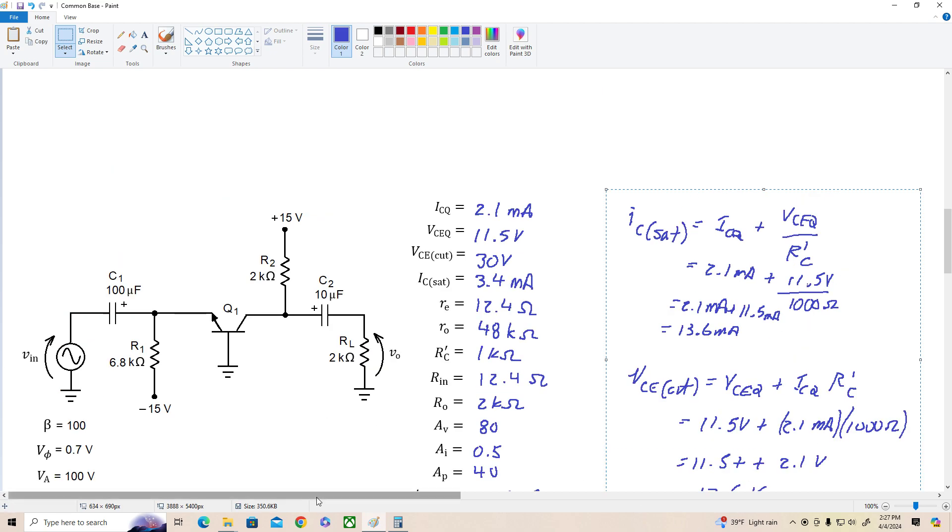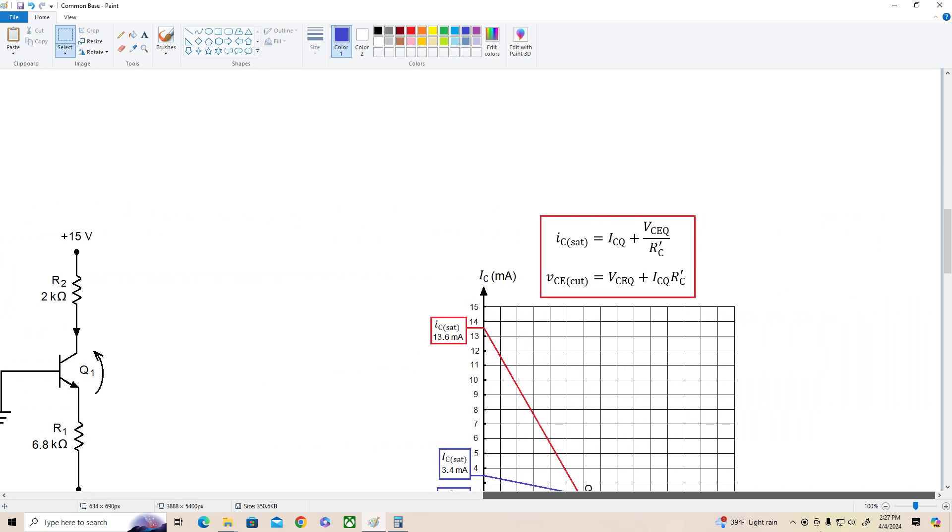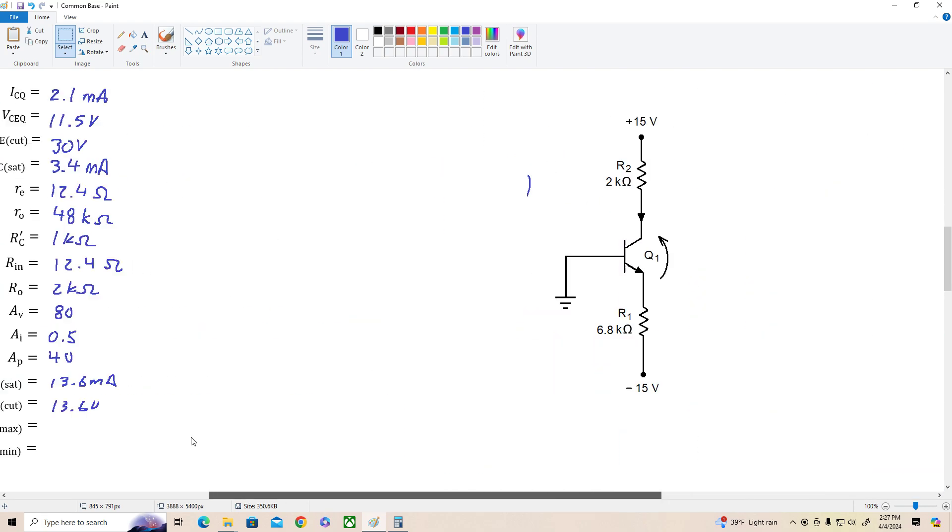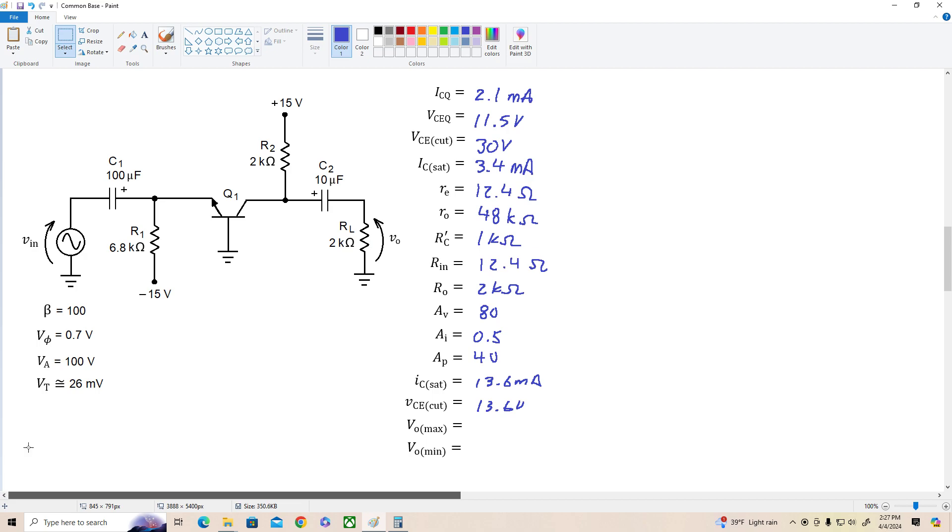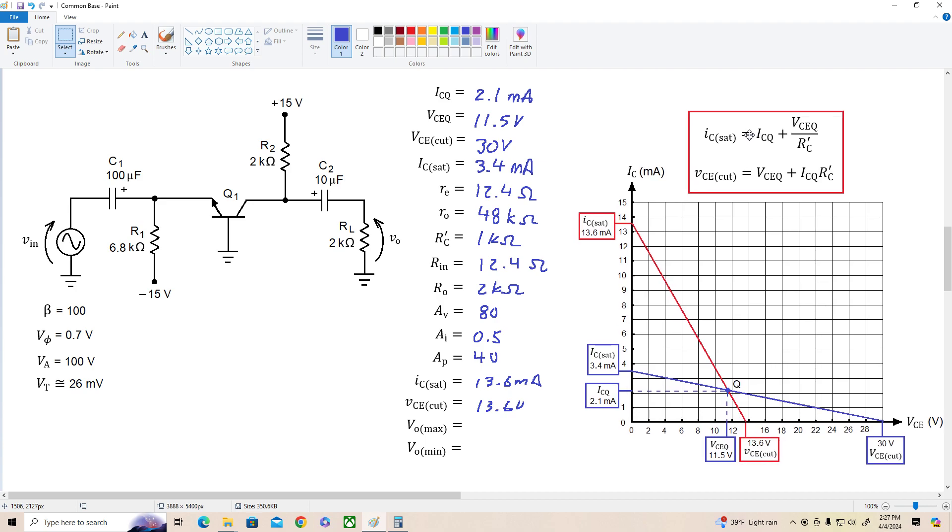I'll clear out this work and let me go get the load lines. I've already determined them ahead of time because they're a little bit messy to sketch, even using paint, so I wanted to get those ready for you. Here's what we've got. So our DC load line, here's our Q point at 11.5 volts and 2.1 milliamps. Our IC sat, 3.4 mils, 30 volts. And here's our AC load line at 13.6 milliamps and 13.6 volts.